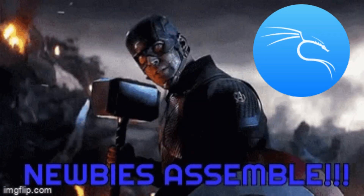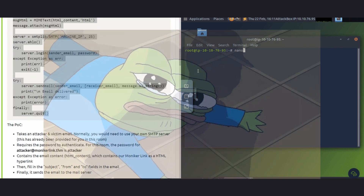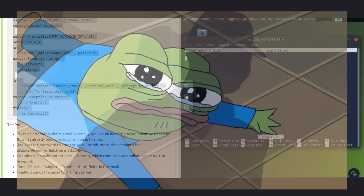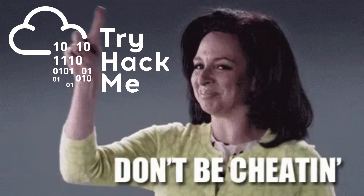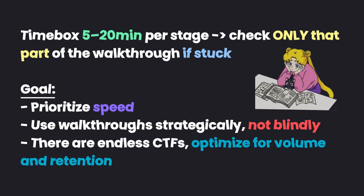If you're newer to OSCP, I would suggest looking at walkthroughs after you get stuck for anywhere between 5 to 20 minutes, depending on how fast you want to move. But don't look at the entire machine walkthrough — if you're stuck at getting initial foothold, only look at that part, then try to escalate privileges yourself. If you get stuck again for 5 to 20 minutes, look at the walkthrough again, learn from it, take notes, and continue. We want to prioritize speed because there's an endless amount of CTFs out there.